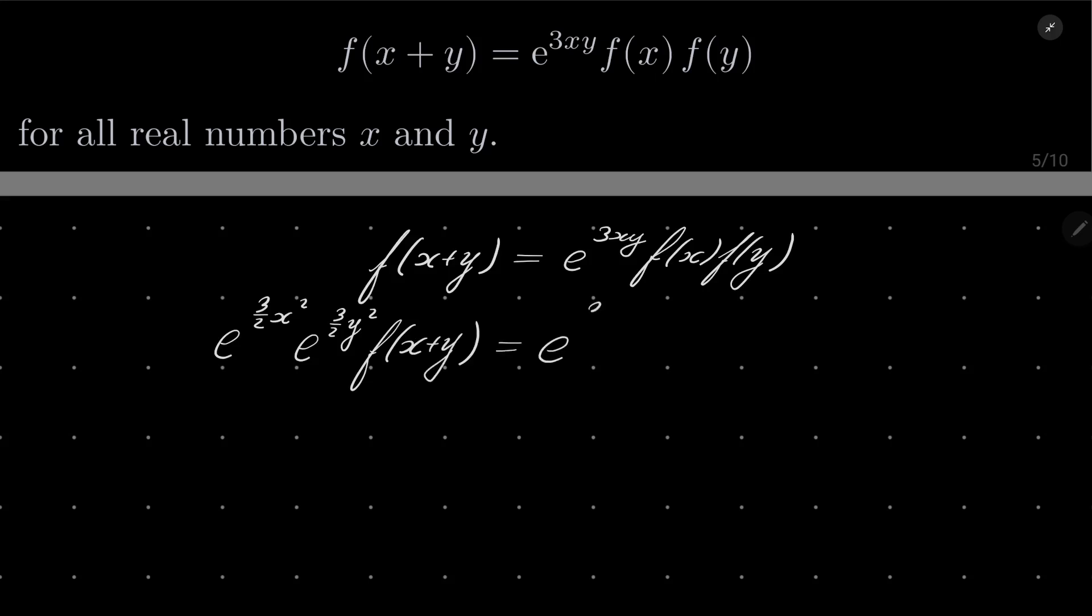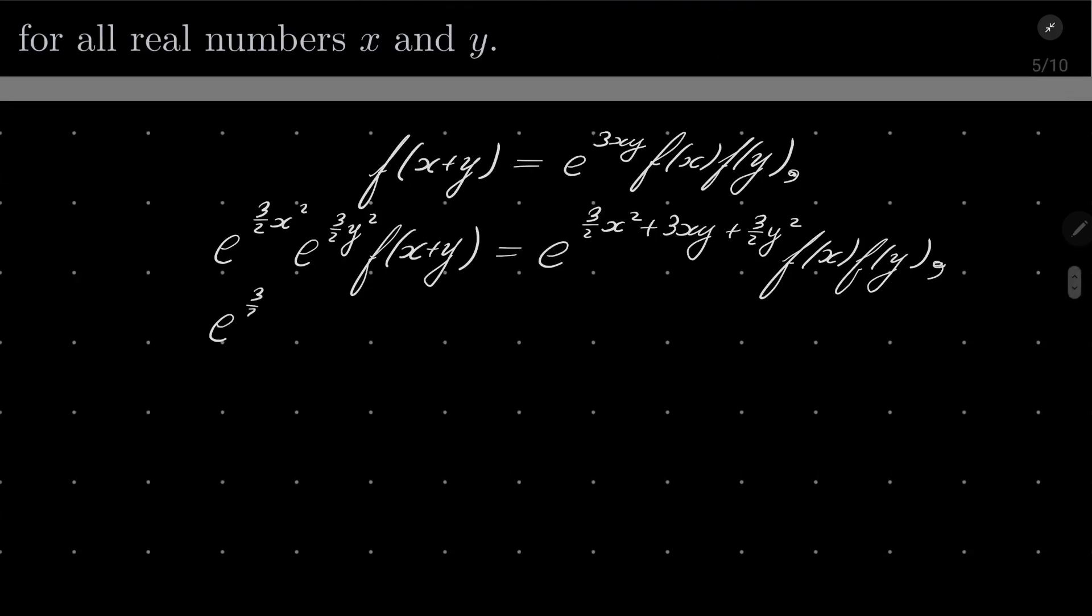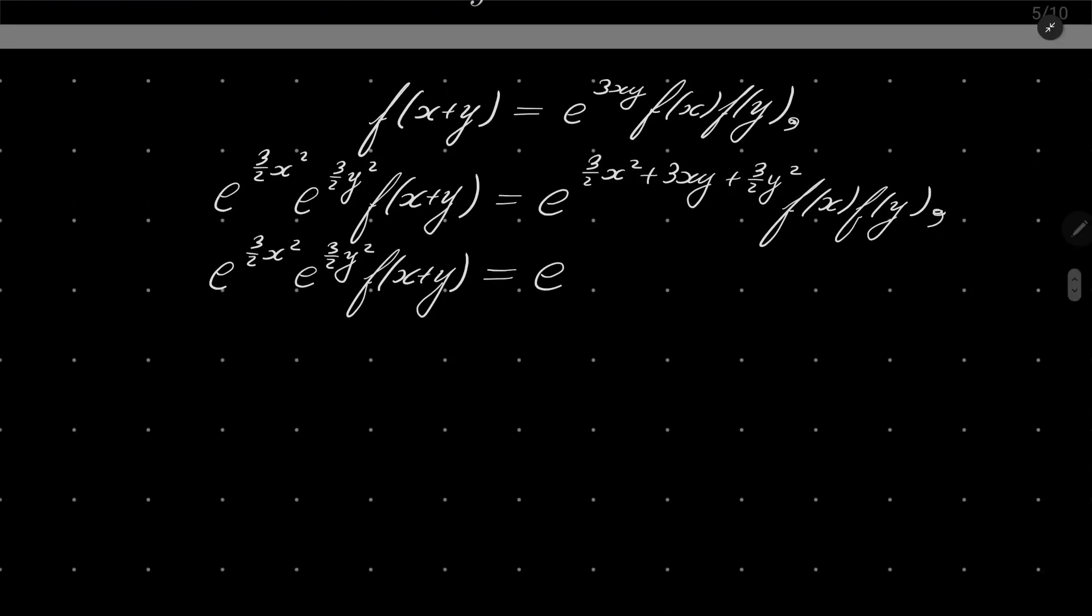And maybe on the right-hand side, I will write it 3 over 2x squared plus 3xy plus 3 over 2y squared, f(x)f(y). What do we notice? Well, we have 3 over 2x squared, e to the power 3 over 2y squared, f(x+y) equals, and here we can combine this exponent into 3 over 2(x+y) squared, f(x)f(y). Perfect.